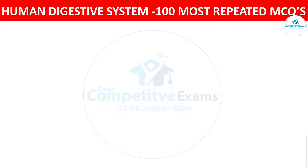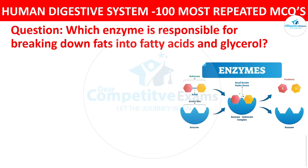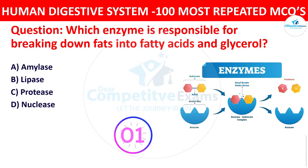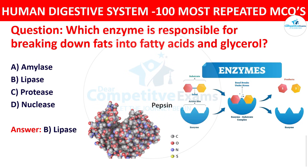Question number twenty-five: Which enzyme is responsible for breaking down fats into fatty acids and glycerol? The options are amylase, lipase, protease, or nuclease. The correct answer is lipase. Lipase is the enzyme that breaks down fats and lipids into fatty acids and glycerol.